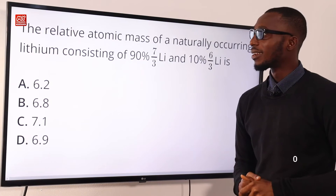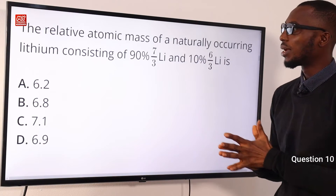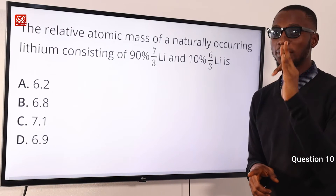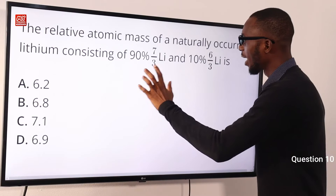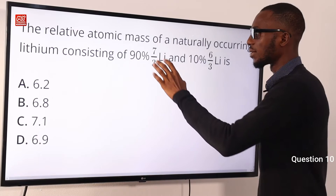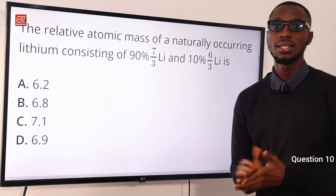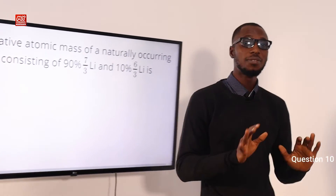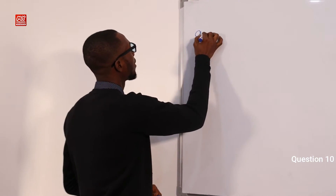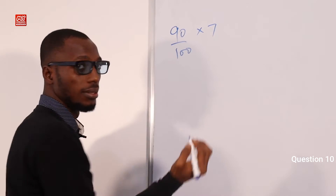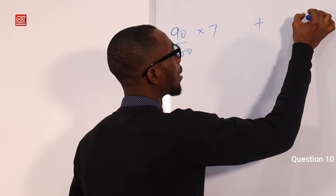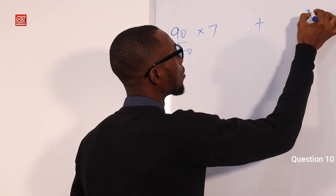Question 10. The relative atomic mass of naturally occurring lithium: lithium has atomic number 3. What we are dealing with is the atomic masses — we have mass 7 at 90% and mass 6 at 10%. So let's solve this: we have (90/100) × 7 plus (10/100) × 6.